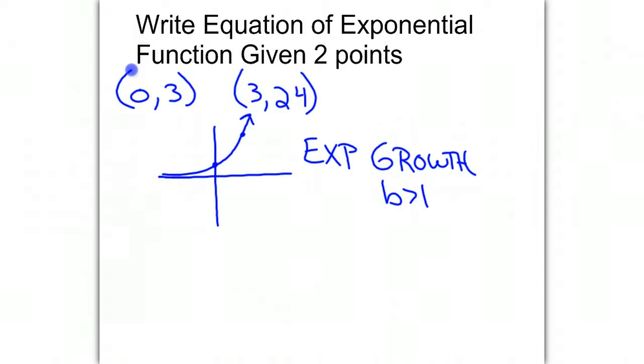We're going to take our two points and insert them into the exponential form, y equals a times b to the x, and we're going to solve for a and b.